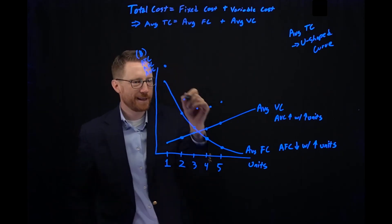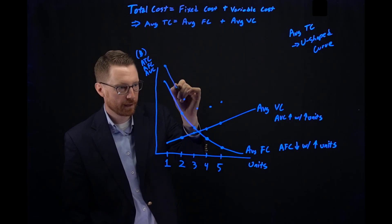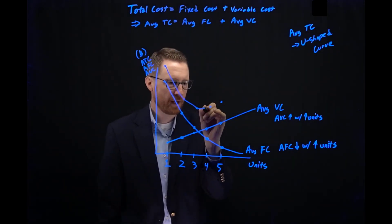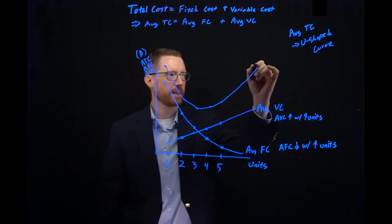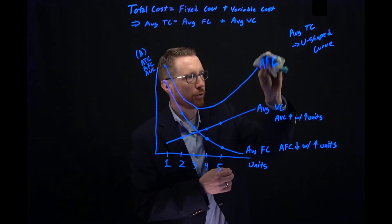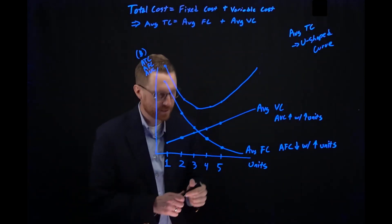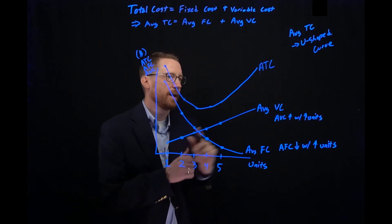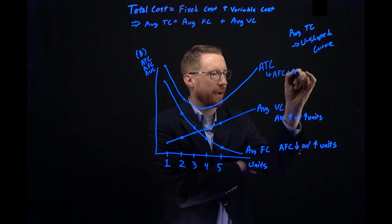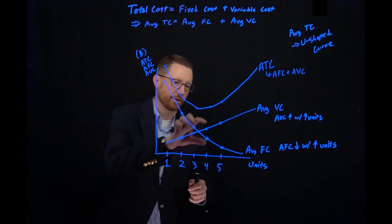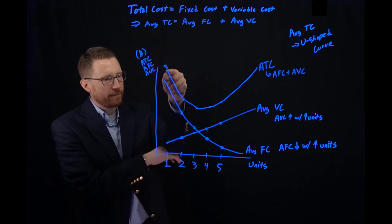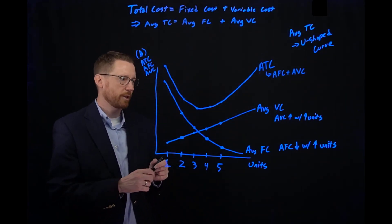So if we connect these points together, what does this look like? We see in the early phase that our average total cost is decreasing, but it eventually bottoms out and starts increasing. This is our average total cost — let's get our notation right. Average total cost equals average fixed cost plus average variable cost. We're essentially just taking both curves and adding them together. So how do we get this decrease and then an increase? How do we get this U-shaped curve?